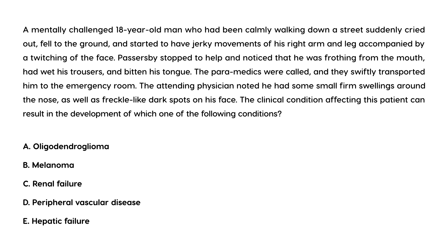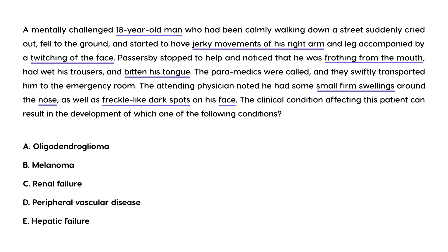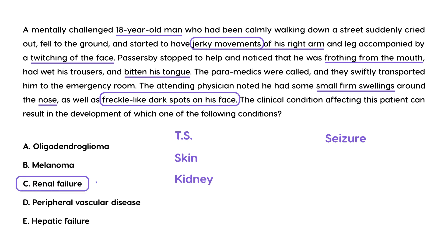Vignette 3: A mentally challenged 18-year-old man was walking down the street when he suddenly cried out, fell to the ground, and began having jerky movements of his right arm and leg with facial twitching. He was frothing at the mouth, had wet trousers, and had bitten his tongue. In the emergency room, the physician noticed small firm swellings around the face and freckle-like dark spots. The jerky movements represent a seizure, and the skin findings suggest tuberous sclerosis. The question asks what other condition he could develop — tuberous sclerosis can affect the kidney, resulting in renal failure, which is the answer.